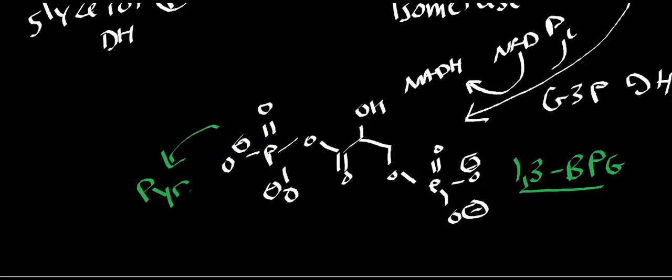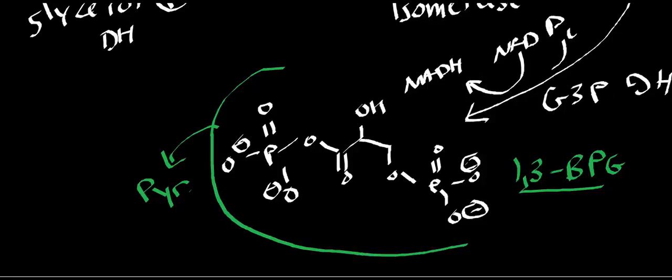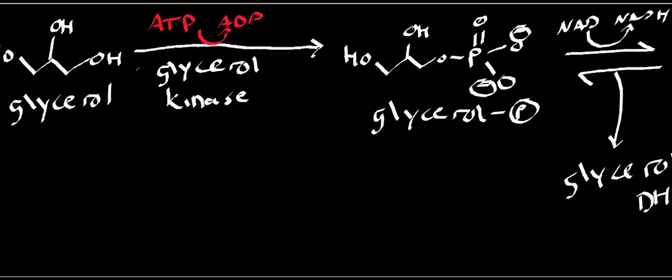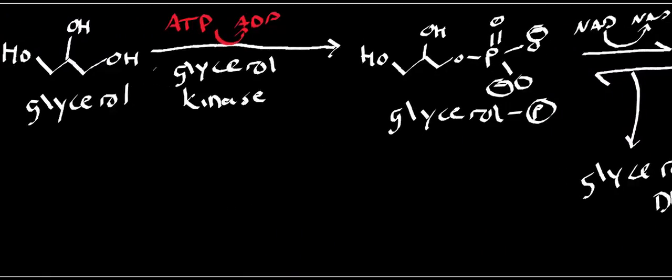We also ultimately end up getting an ATP because this guy gets consumed by phosphoglycerate kinase. That ATP ends up replacing the one that we burned with glycerol kinase to make glycerol phosphate. The ATP is made up for by phosphoglycerate kinase, but we end up with two NADHs. The NADHs of course go to the respiratory chain and enter there at NADH ubiquinone oxidoreductase, which is complex I.